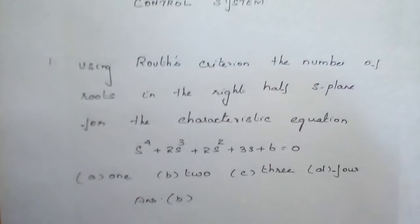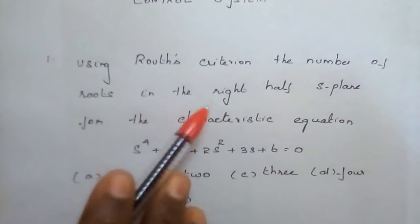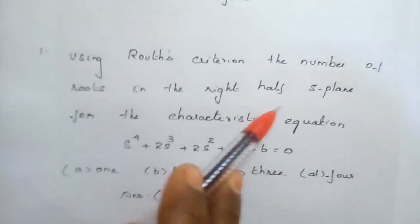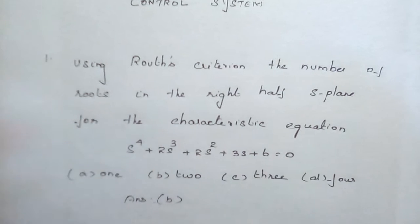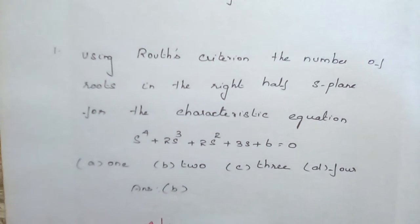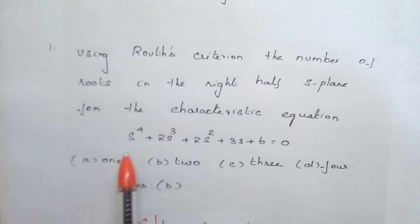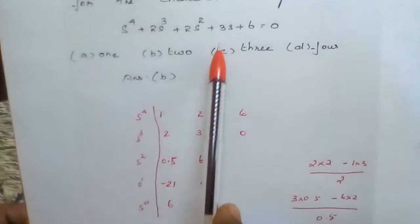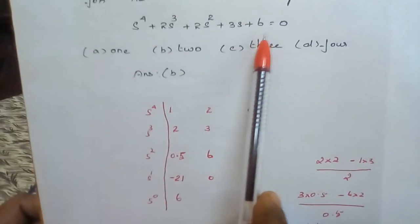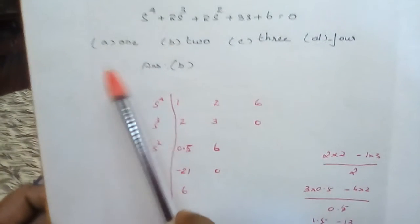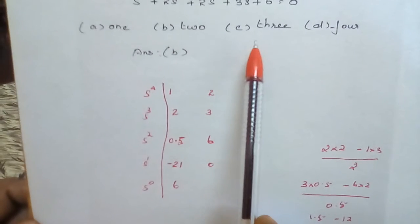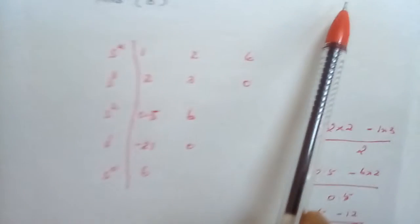Question number 1: Using Routh's criterion, find the number of roots in the right half of the S-plane for the characteristic equation S⁴ + 2S³ + 2S² + 3S + 6 = 0. The options are: A) 1, B) 2, C) 3, and D) 4.